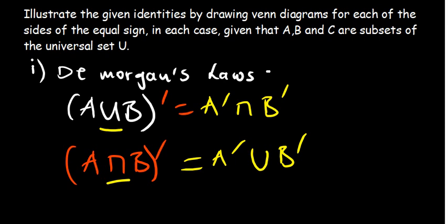Think of it as distributing the complement: the complement of A is A complement, then the sign should change, then the complement of B is B complement. The same applies to the second part — the intersection becomes a union. So these are the two De Morgan's laws. How do we get to show them?